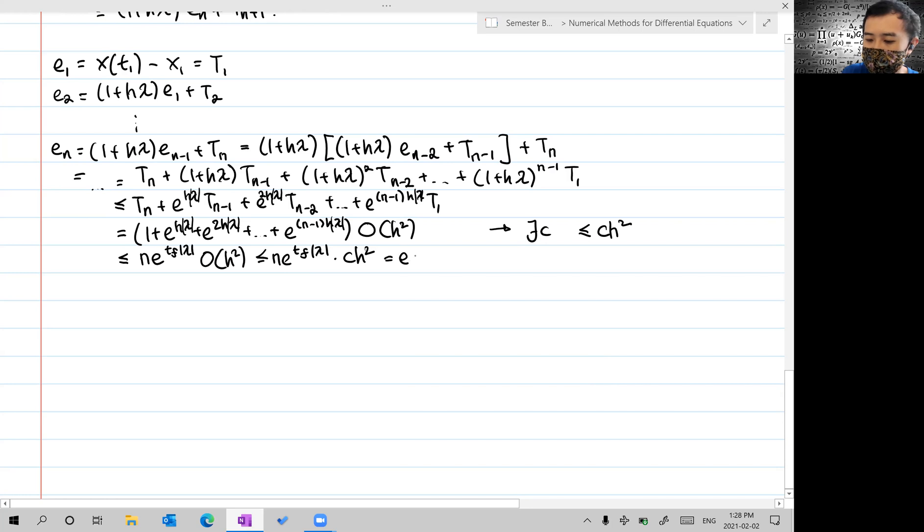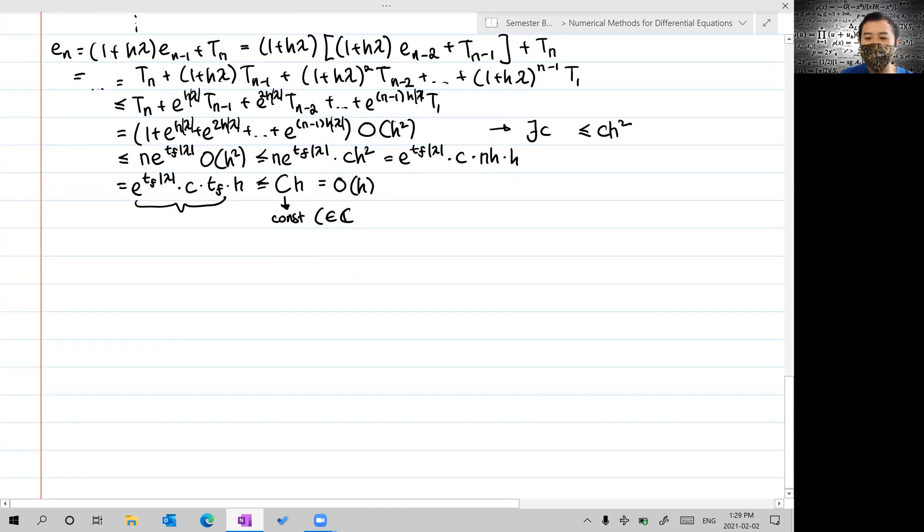We are able to obtain that this is bounded by e^{t_f·λ}·c·h. It becomes e^{t_f·λ}·c·t_f·h, and this is a constant. So it would be c·h, a constant. Then we arrive at the global error being O(h). That's it.